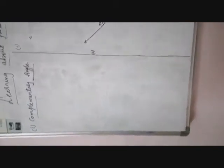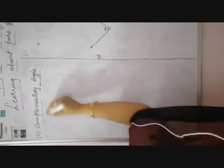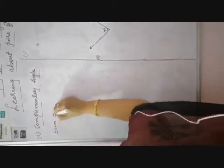In the pairs of angles, we are going to learn complementary angles and supplementary angles. What are complementary angles? Complementary angle is nothing but the sum of two angles — sum means addition — must be equal to 90 degrees. Remember, children: complementary angle means the sum of two angles must be equal to 90 degrees.